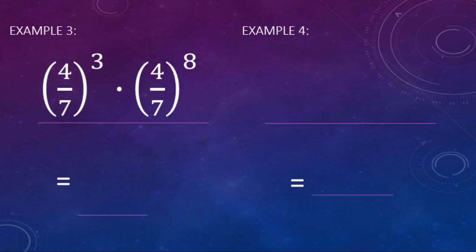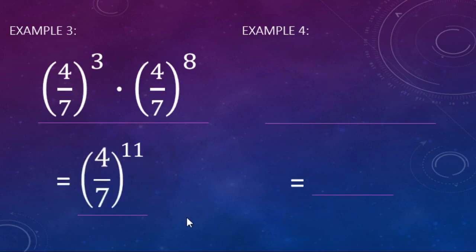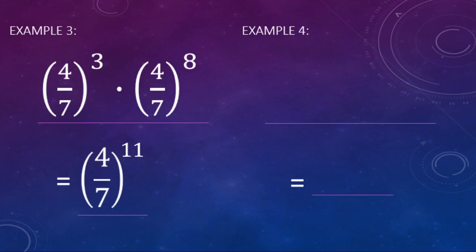Here we have four-sevenths to the third power times four-sevenths to the eighth power. The total of four-sevenths being multiplied — three plus another eight — is going to be eleven four-sevenths being multiplied. The exponent tells you how many you have (in this case eleven), and the base tells you what you're multiplying together (in this case, they're all four-sevenths).